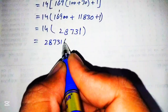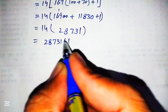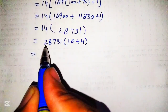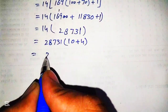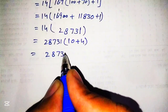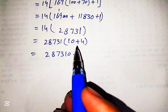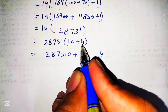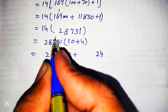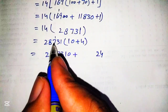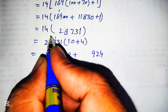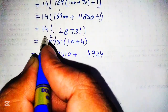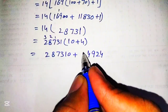Now we multiply 28,731 by 14. We write 14 as 10 plus 4. Multiplying 28,731 by 10 gives 287,310. Multiplying by 4: 4 times 1 is 4; 4 times 3 is 12, write 2 carry 1; 4 times 7 is 28 plus 1 is 29, write 9 carry 2; 4 times 8 is 32 plus 2 is 34, write 4 carry 3; 4 times 2 is 8 plus 3 is 11.